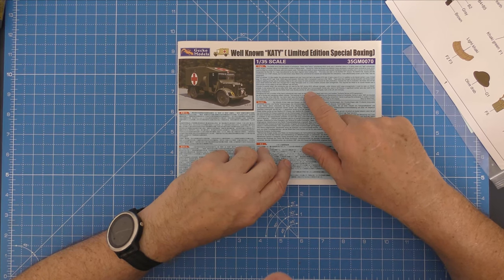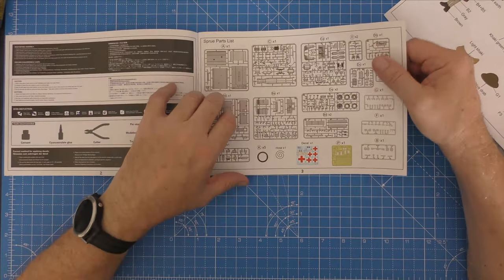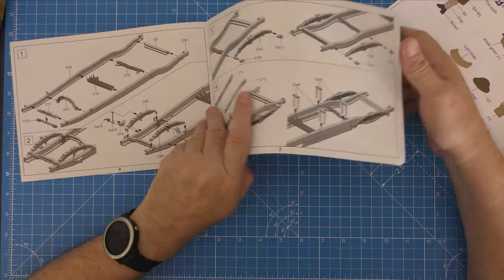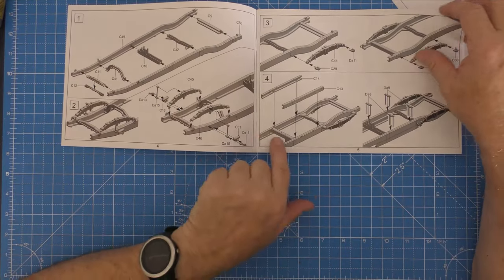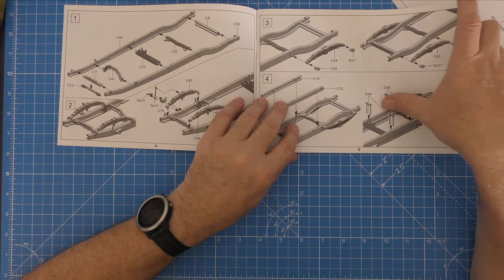So I got the sprue callout there, and then obviously like most things it starts building up the chassis and the leaf springs and obviously some brackets or something there.